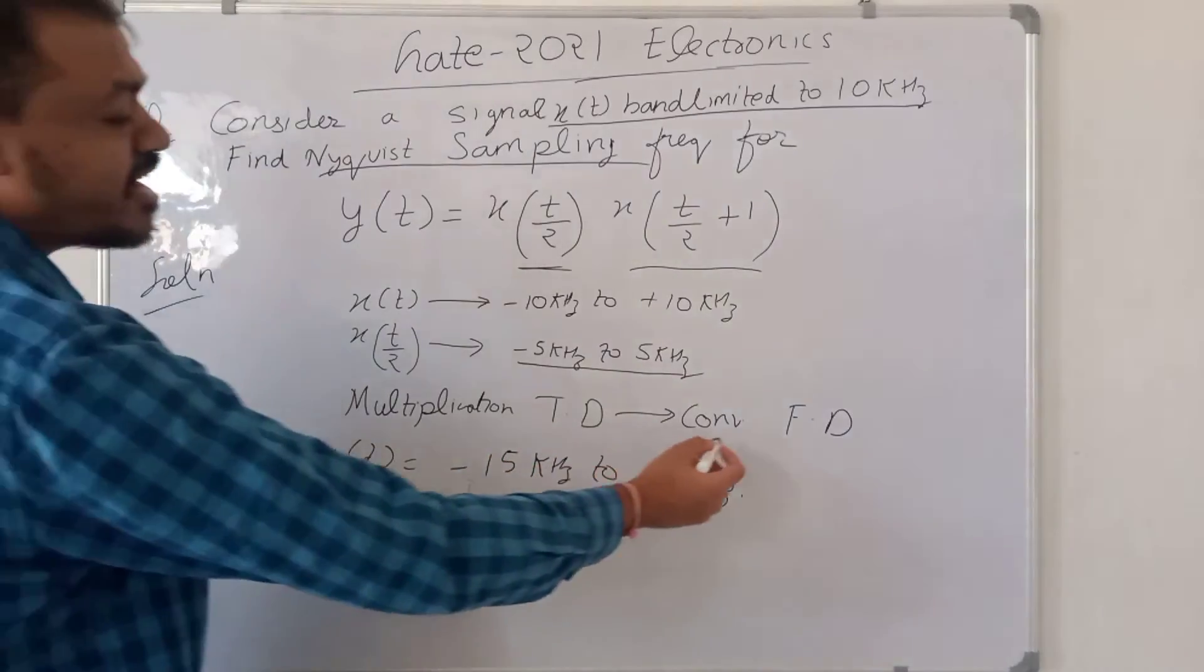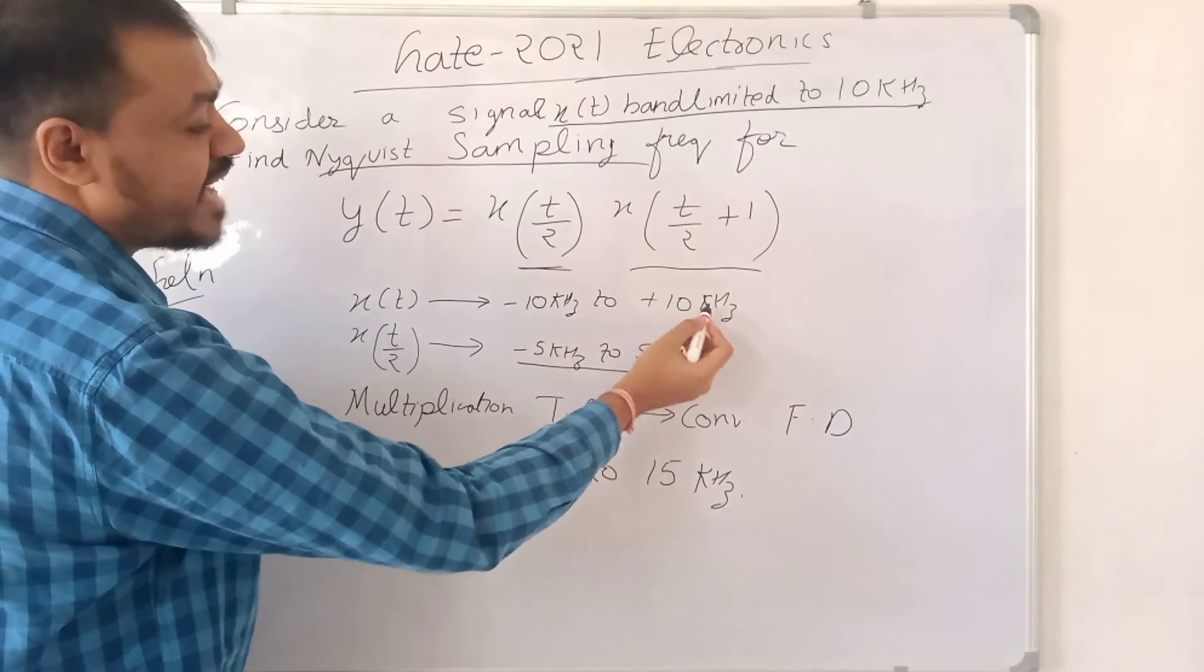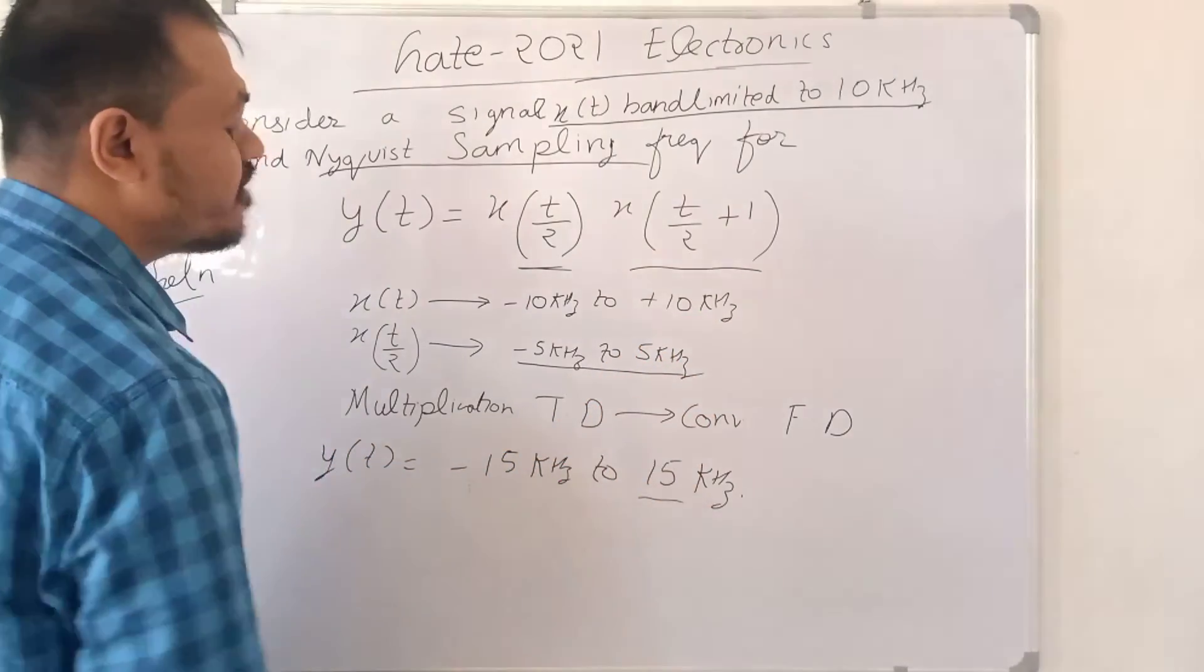Because when we convolve in frequency domain, the upper and lower bands will just add up. So 10 kHz and 5 kHz will add up to this 15 kHz.